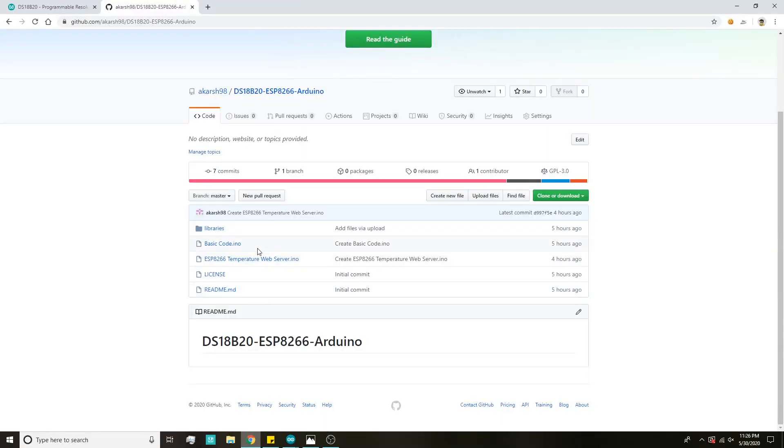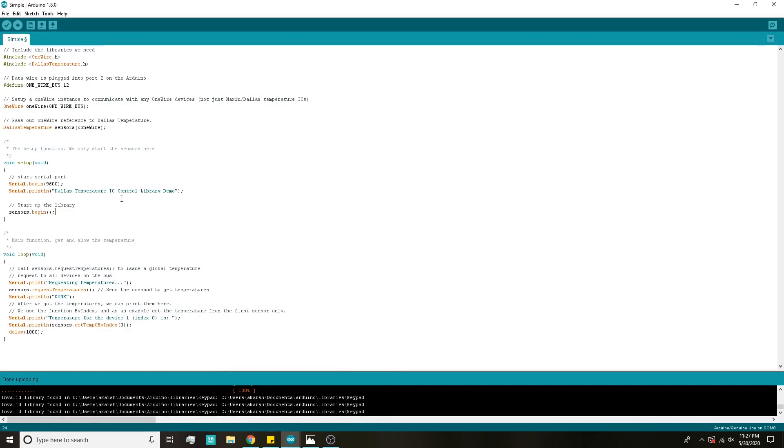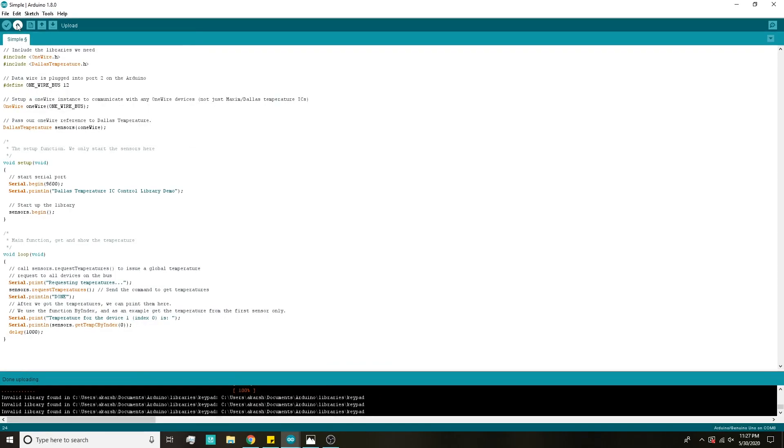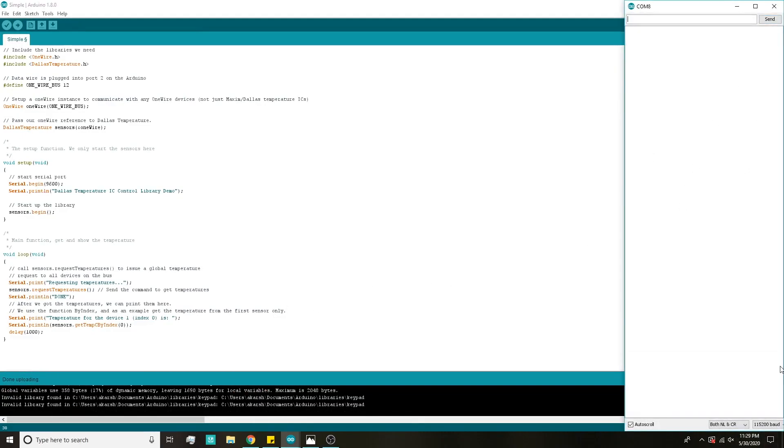So the codes that I will be using and libraries required for the codes will be in a GitHub repository which you can find in the description box below. Head over to the GitHub page, open the basic code, and copy it on your Arduino IDE. So once you've copied the code on the Arduino IDE, head over to tools, select the correct board and select the correct COM port, and just hit the upload button. Once the code gets uploaded, head over to the serial monitor and select the correct baud rate, which is 9600 for our case, and you will see that the temperature reading is shown over here.